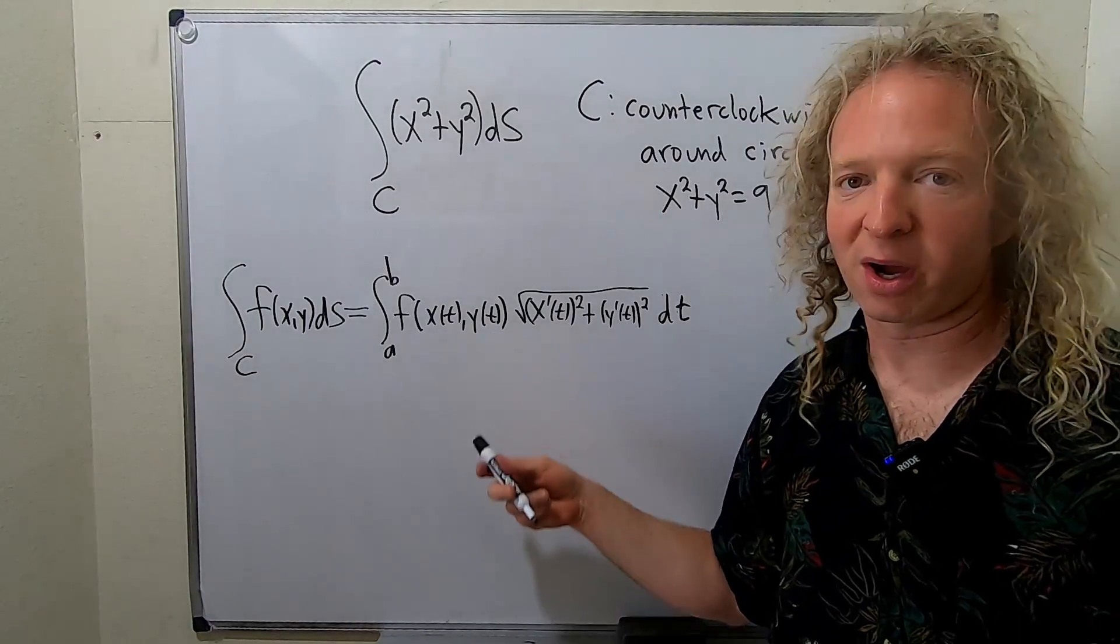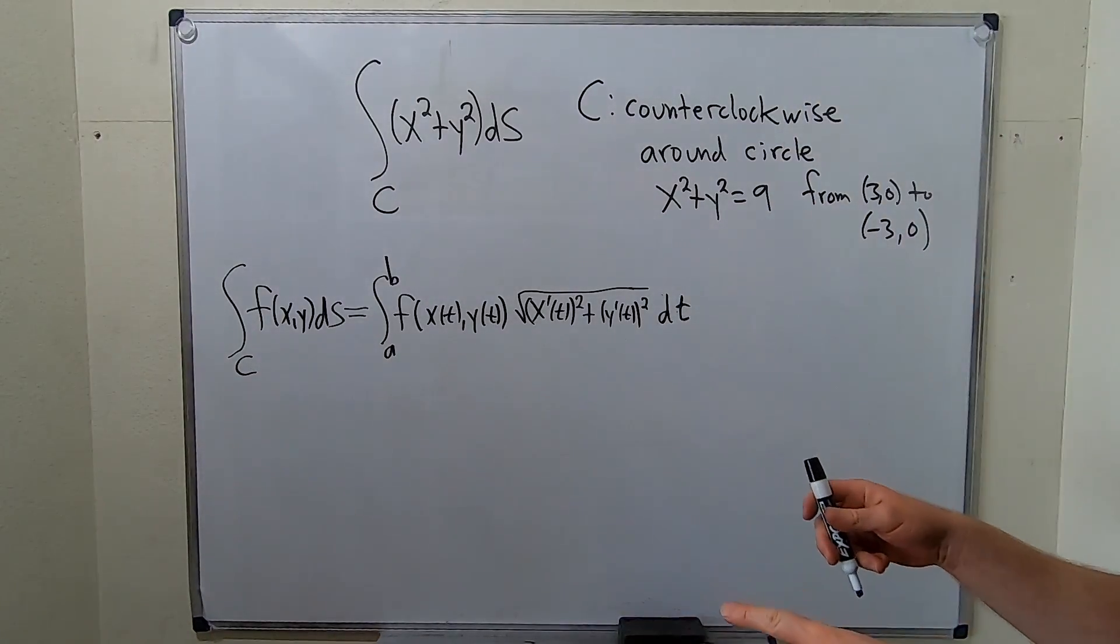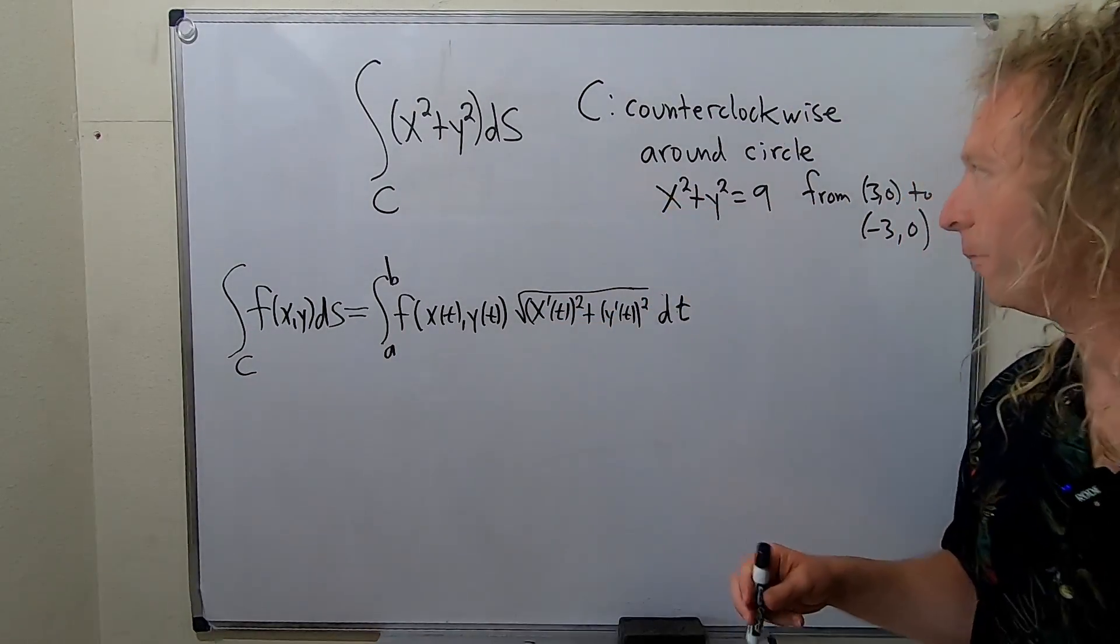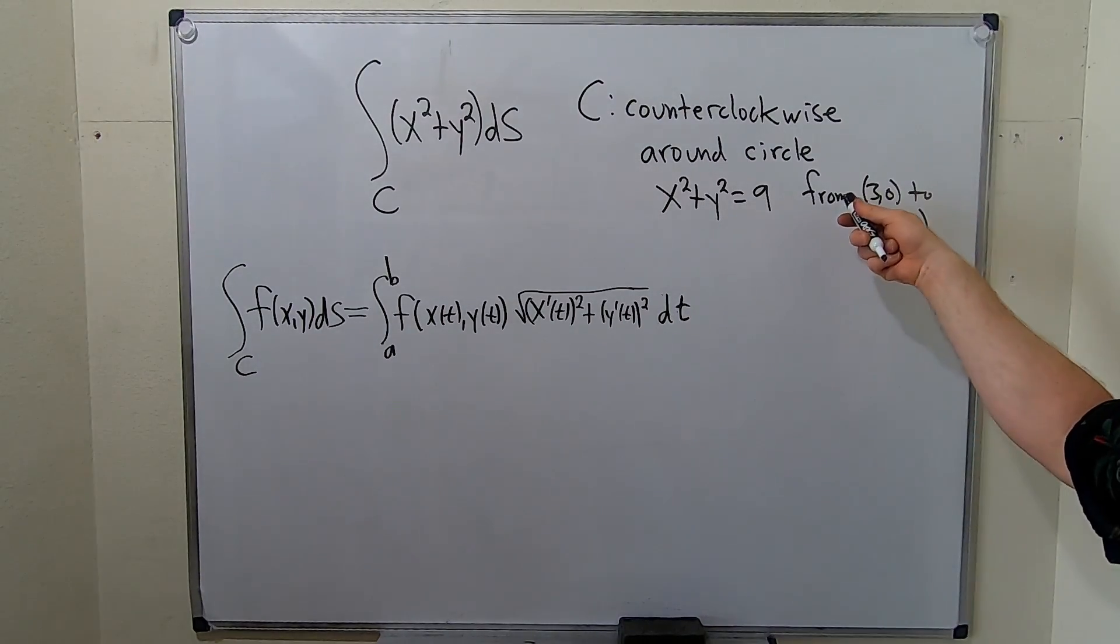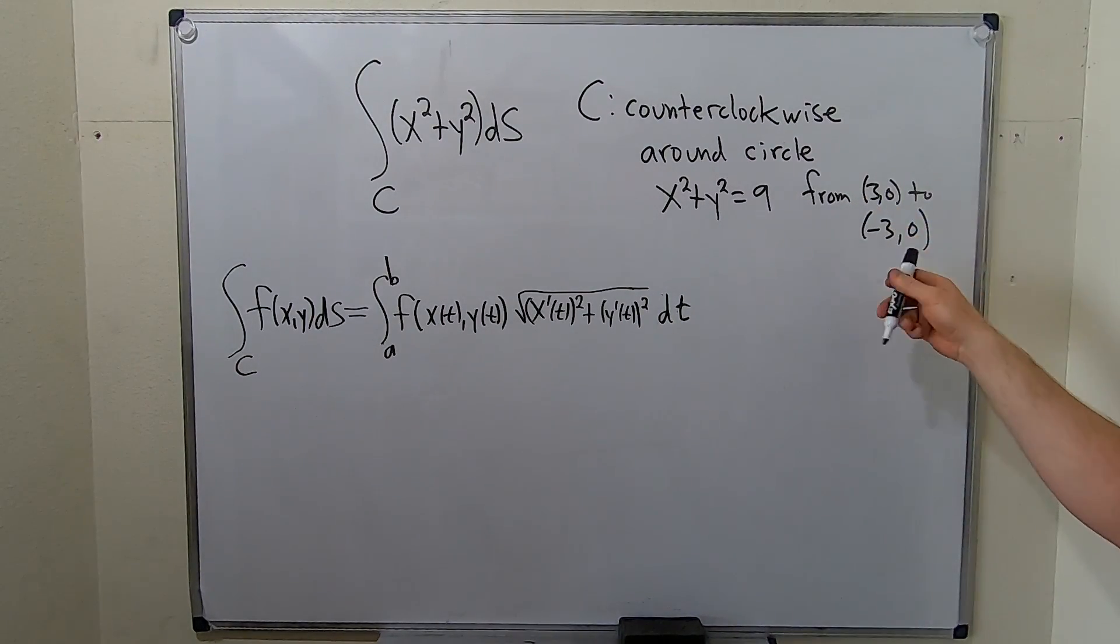So the first thing we have to do is find x and y. So we have to find a vector-valued function that parametrizes this circle. So this is a circle of radius 3 centered at the origin, and we're traveling around the circle from 3, 0 to negative 3, 0.